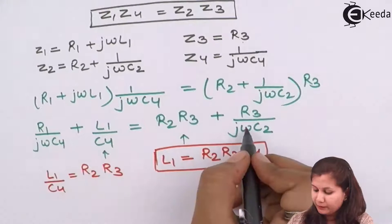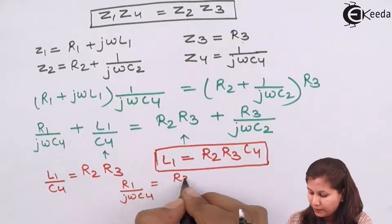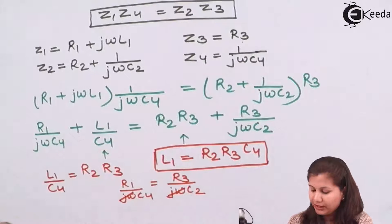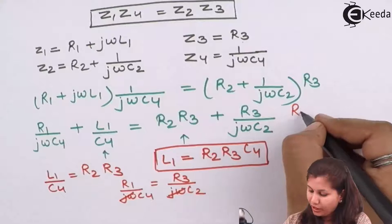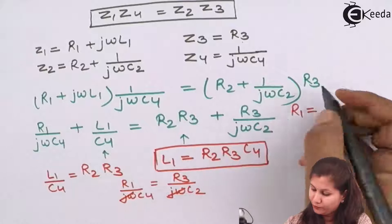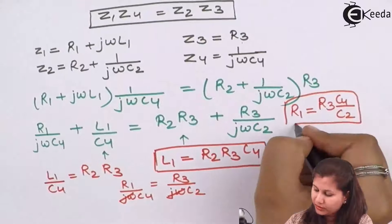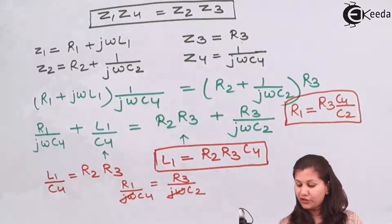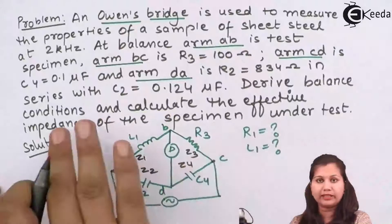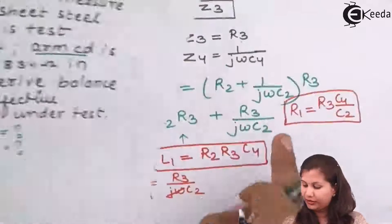Equating the imaginary parts: R1/(jωC4) = R3/(jωC2). The jω terms cancel, so we get R1 = R3·C4/C2. These are the balance conditions. We have the equations for R1 and L1, and now we are going to substitute the given values to calculate R1 and L1.